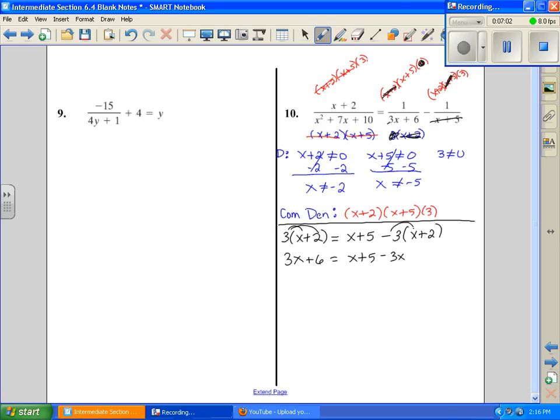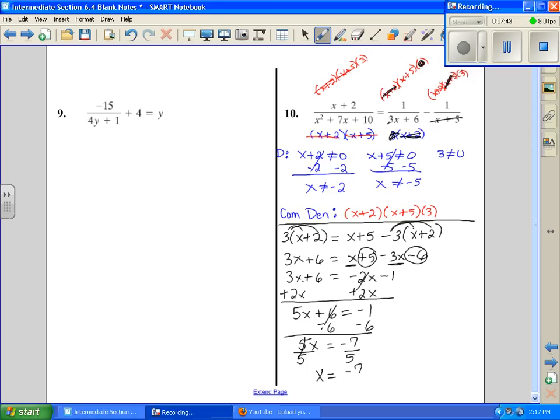Distribute here. Add like terms anywhere that you can. I'm going to add here and get negative 2x, and I'm going to add my like terms here and get minus 1. I want to move all my variables to one side. That's going to give me 5x plus 6 equals negative 1. Get x by itself. 5x equals negative 7, and then divide both sides by 5, x equals negative 7 fifths. Now, check and make sure our domain is fine. Our answer and our only solution is x equals negative 7 fifths.